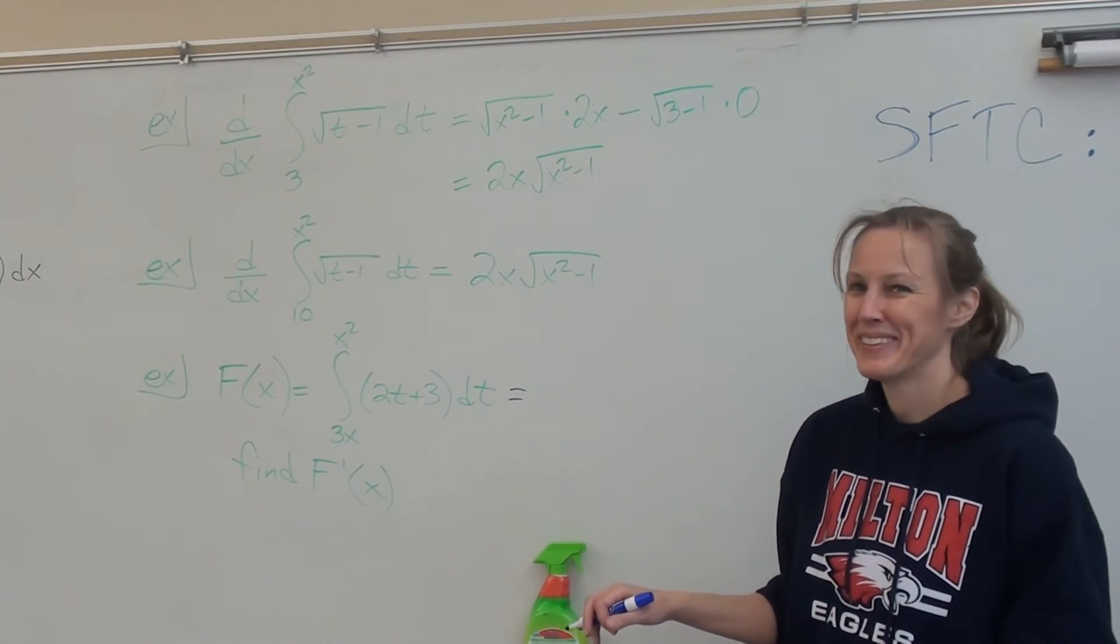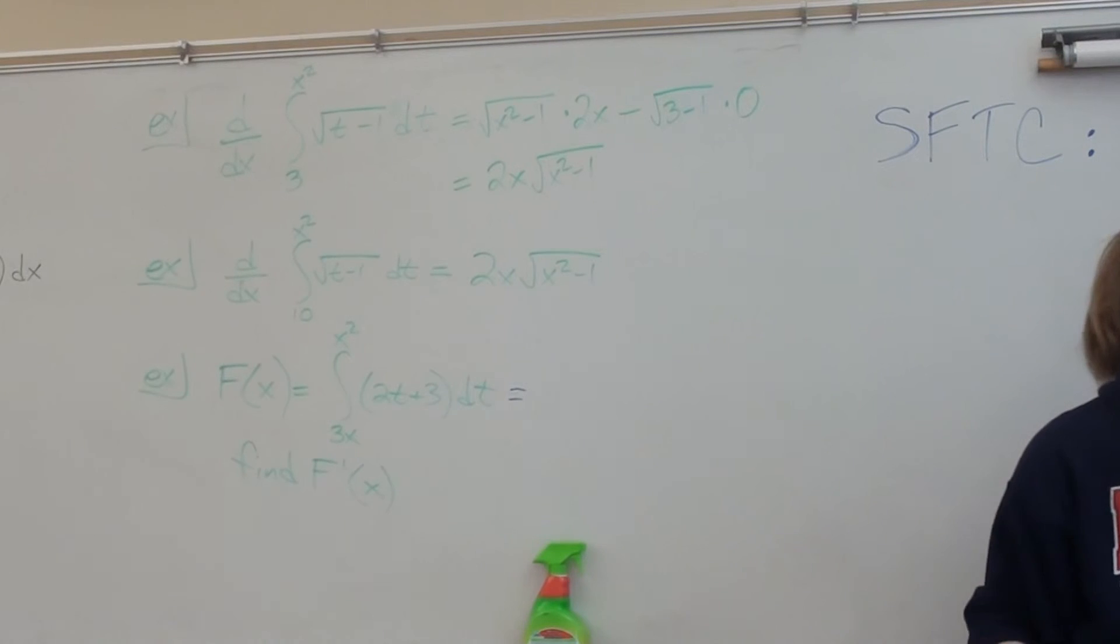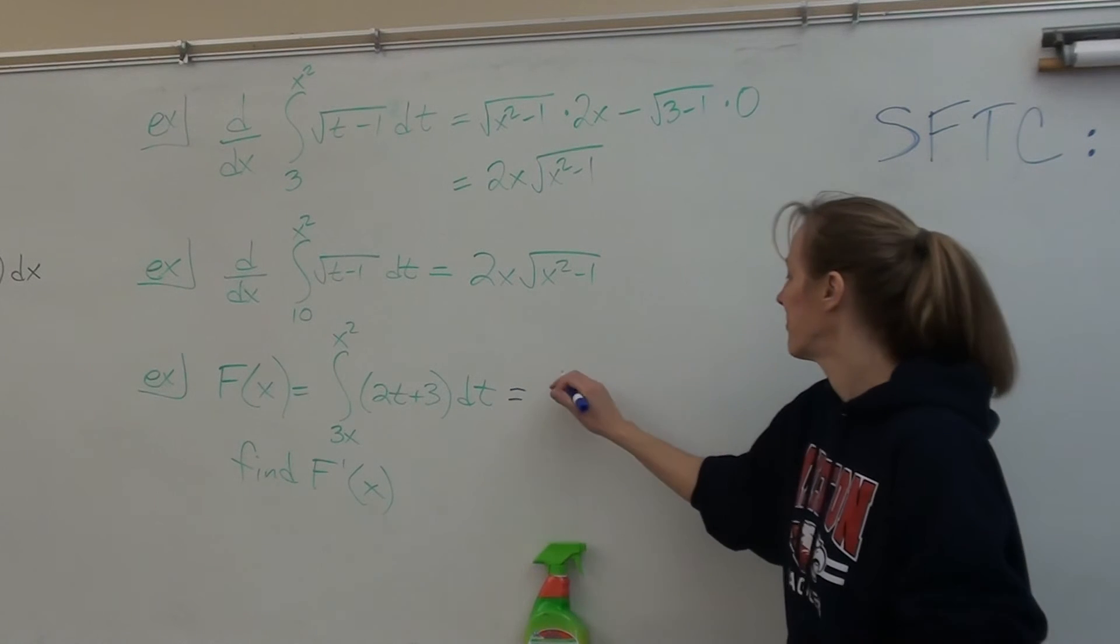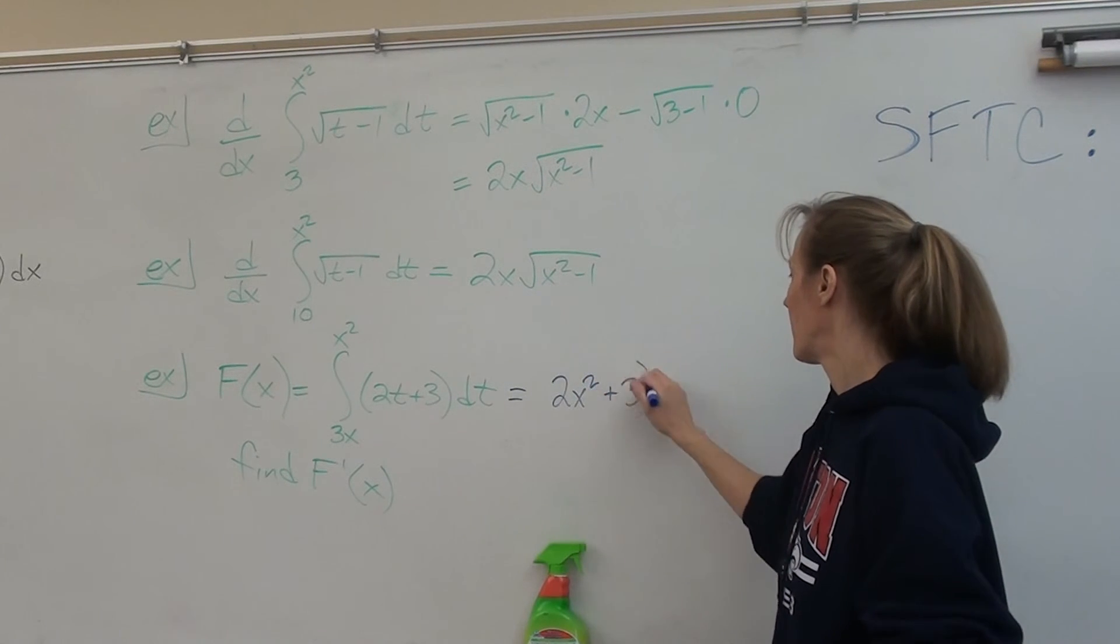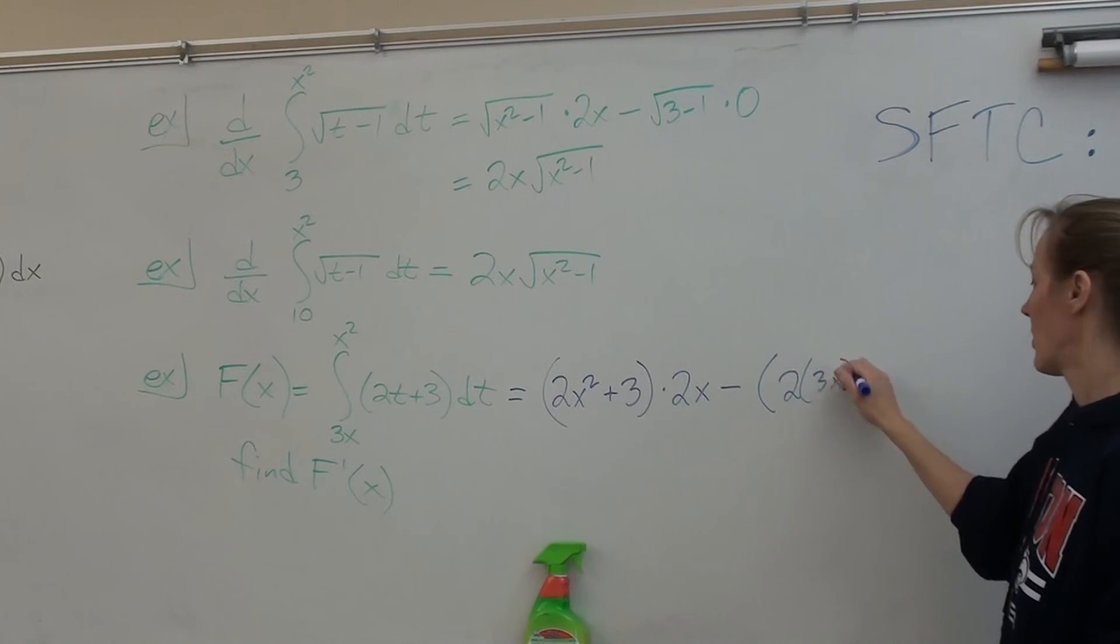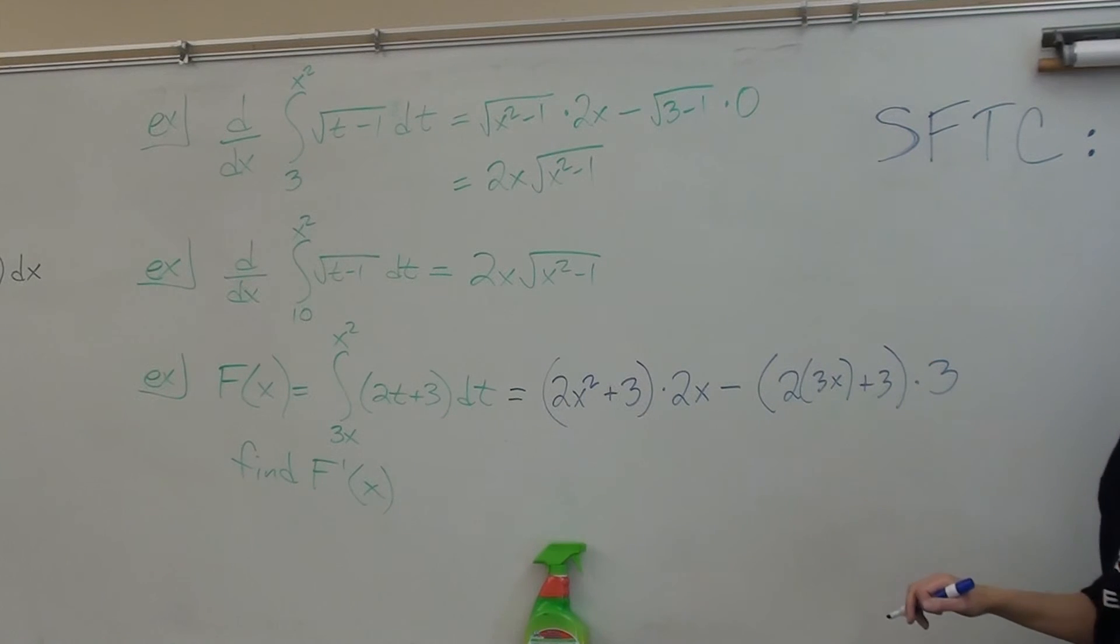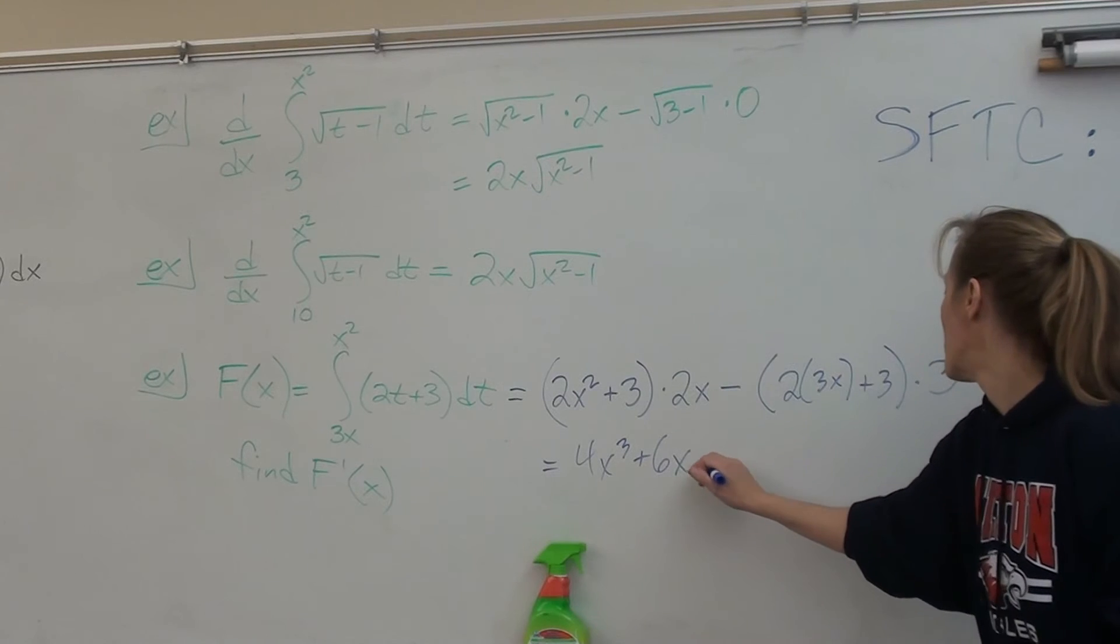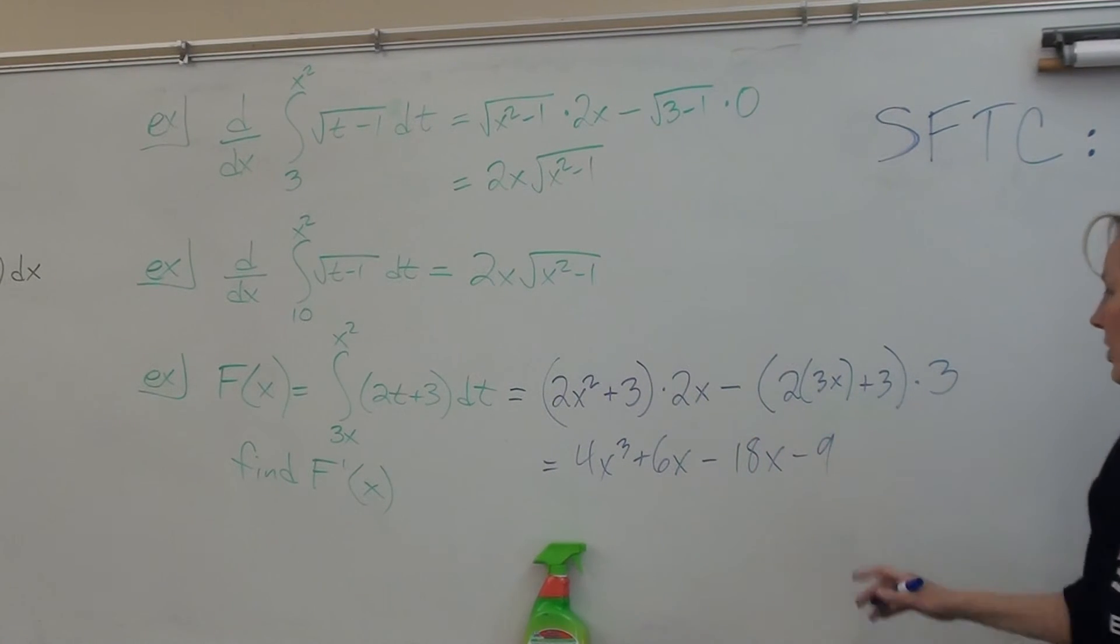Alright. So here's what we have. Actually, do you guys want to take a second and try it? Alright. Take one second. You try. Does that make sense? And then you could clean it up. So you'd have 4X cubed plus 6X minus 18X minus 9. And then you combine like terms.